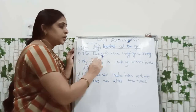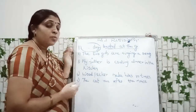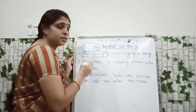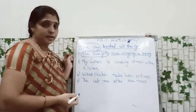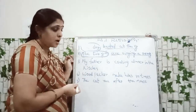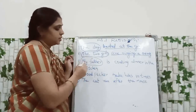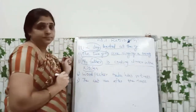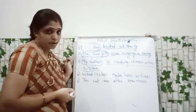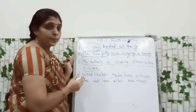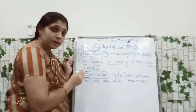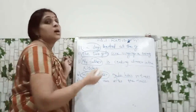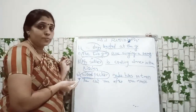Second one: The two girls are singing a song. What is the naming part? The two girls. What are they doing? Action — are singing a song, underline. Next: My father is the naming part. What he is doing — action — he is cooking dinner in the kitchen. Next: Woodpecker is the naming part. What it is doing — action — make holes in the trees.